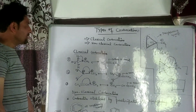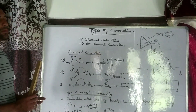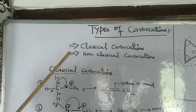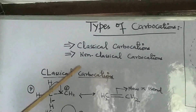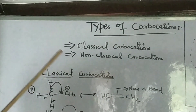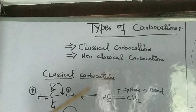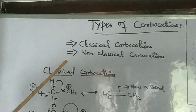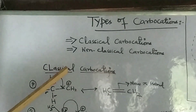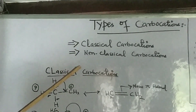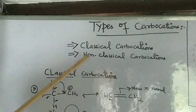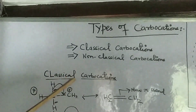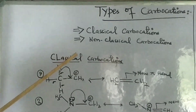Now, today's lecture will be based on different types of carbocations. This lecture is very important from the examination point of view, and you will find most of the questions asked from this part. We have generally two types of carbocations: number one is classical carbocations, and number two is non-classical carbocations. We will discuss them one by one.